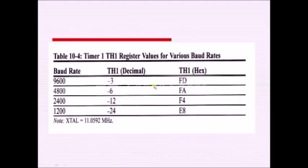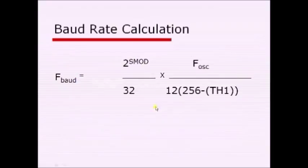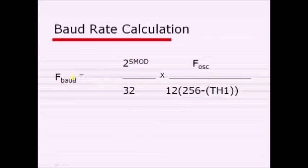Pre-calculated baud rate values for common rates are: 9600, 4800, 2400, and 1200 baud, given in hexadecimal format. With SMOD = 0, using the known f_oscillator, and the constants 12 and 256, we solve for TH1 and load that value into TH1.